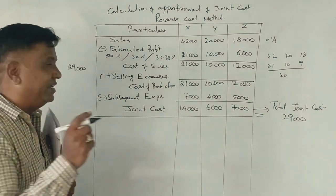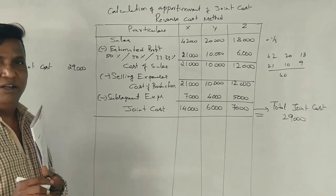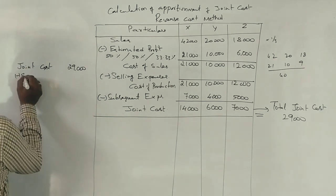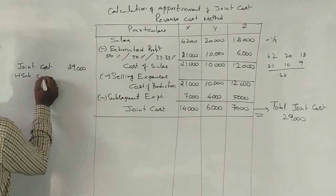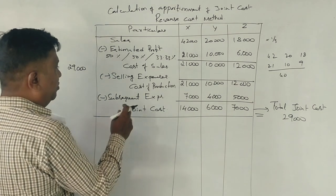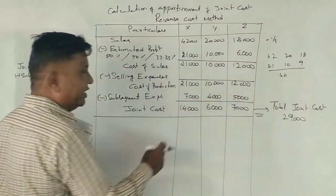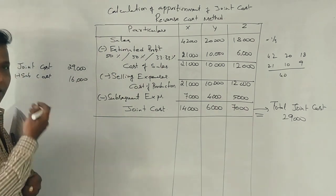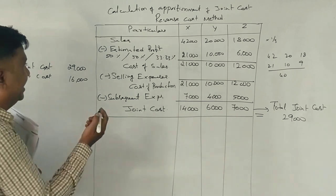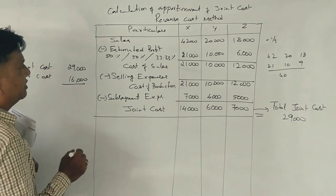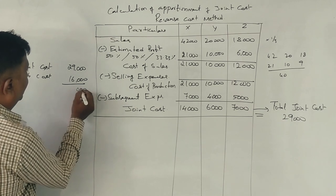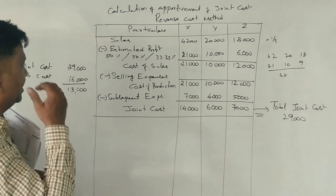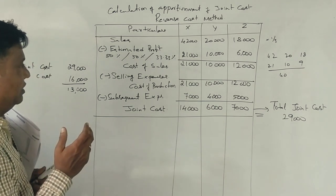This is the total subsequent expenses. So, 7, 4, 5, 6, 7, 8. Subsequent cost. Total expenses and subsequent expenses.